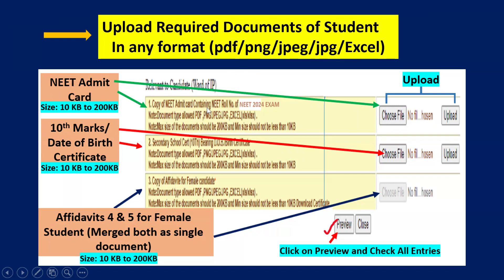The first document to upload is a copy of the NEET 2024 admit card — click on Choose File and upload your certificate. The second document is the secondary school certificate — that is the 10th class marks list or date of birth certificate; any one can be uploaded. The third document is a copy of affidavit for female candidates only. Female candidates must upload two affidavits: Affidavit 4 (related to the student) and Affidavit 5 (related to the insured person). These two affidavits must be merged as a single document before uploading. Each document size should be between 10 kilobytes and 200 kilobytes.